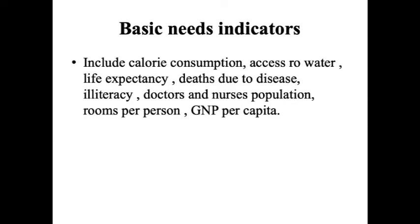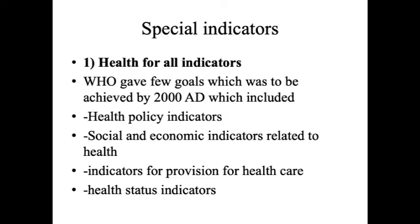Basic need indicators include calorie consumption, access to water, life expectancy, deaths due to diseases, illiteracy, doctors and nurses per population, rooms per person, and GNP per capita. Special indicators include the Health for All indicators set by WHO.